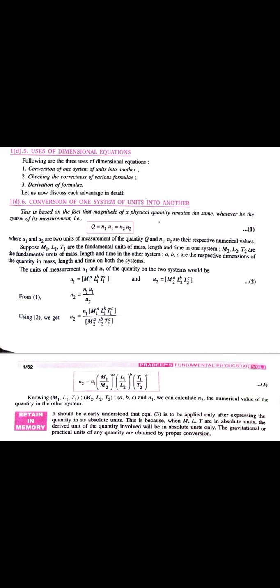So, the units of measurement of U1 and U2 of the equation on the two systems will be U1 ki dimensions form me ham lickhen toh ho jayega M1 is to power A, L1 is to power B, T1 is to power C. U2 ho jayega M2 is to power A, L2 is to power B, T2 is to power C. Now, using equation first, we can write N2 as N1 U1 upon U2.